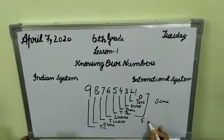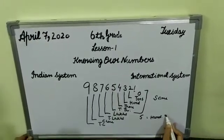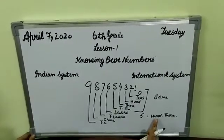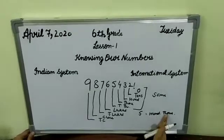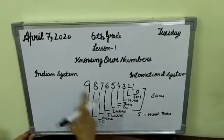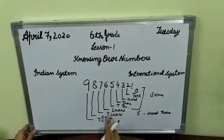That means in international system we will write as 100,000. 100,000—how it is 100,000? 2 zeros of 100 and 3 zeros of 1000. 2 or 3, that becomes 5.